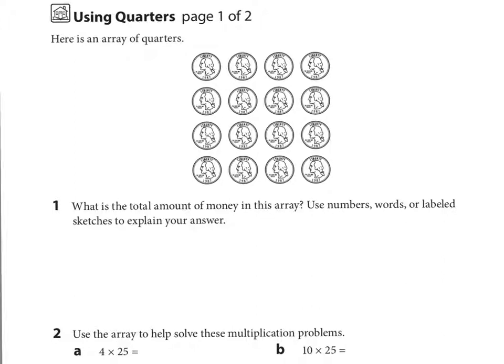At the top it says, here is an array of quarters. Number one asks, what is the total amount of money in this array? Use numbers, words, or labeled sketches to explain your answer. So again, we look closely at this question, it's asking for the total amount of money. So be careful, it's not asking for the total amount of quarters, but how much money it represents.